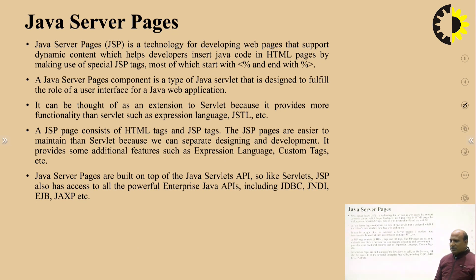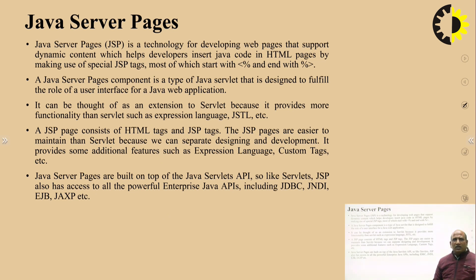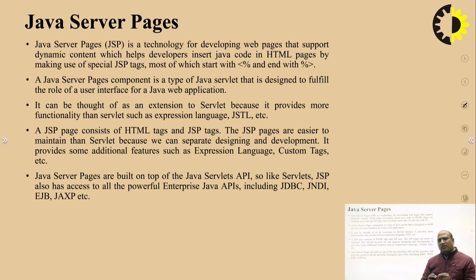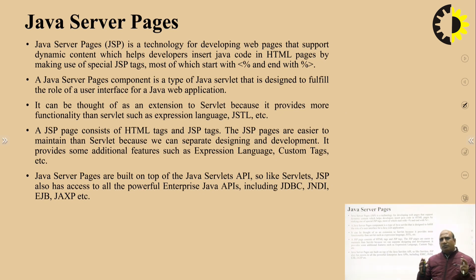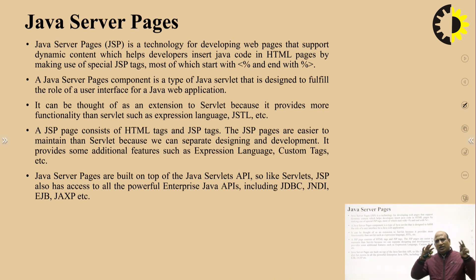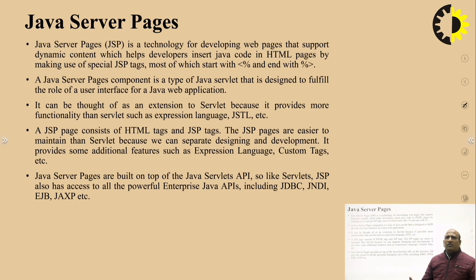Java Server Pages is a technology for developing web pages that support dynamic content, which helps developers insert Java code into HTML pages by making use of special JSP tags. JSP is a technology we generally use to create a dynamic web page. Static web pages are created through scripting languages like HTML, which contains static content. Wherever we want to fetch or use dynamic content, we use a programming language — here we use Java.